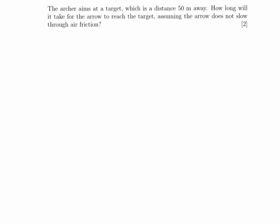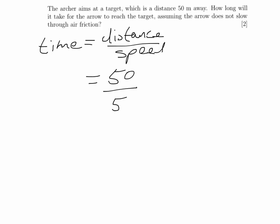Now we're being asked how long in time it takes the arrow to reach the target that's 50 metres away. Very straightforward. We use time is distance divided by speed. We're told that the distance is 50 metres. We worked out what the speed was, that was 50 metres per second. So therefore, the time that it takes is one second.